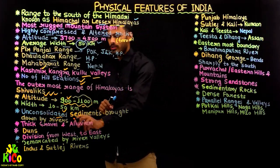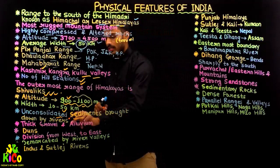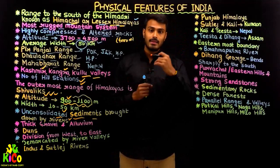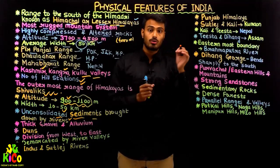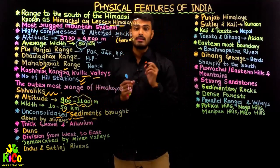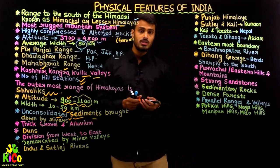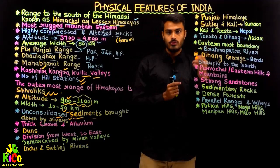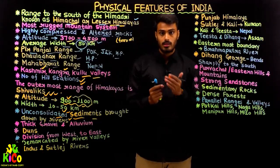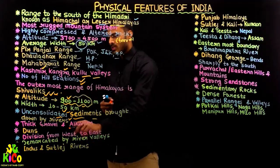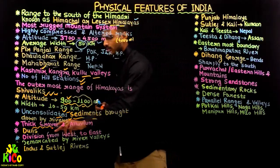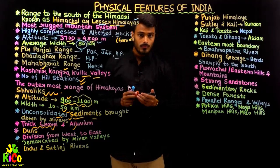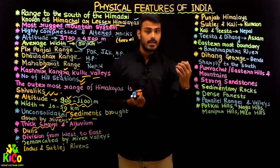The Shivalik range is comprised of unconsolidated sediments. The Himalayan rivers — as they flow down from the top and middle of the Himalayas toward the northern plains — bring with them a lot of sediments and rocks. Over millions of years, these rivers have continuously deposited sediments at the bottom of the Himalayas. The land here is basically made up of thick gravel and alluvium. Alluvium refers to small particles of soil brought down by Himalayan rivers such as Ganga, Yamuna, Satlaj, Indus, Ghagra, and Gandak.